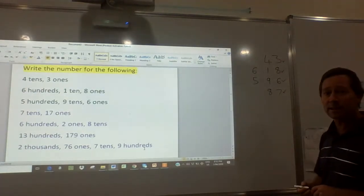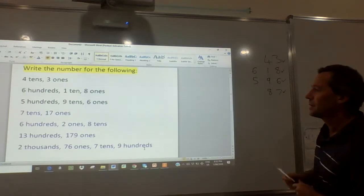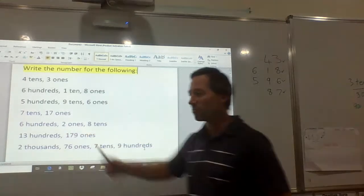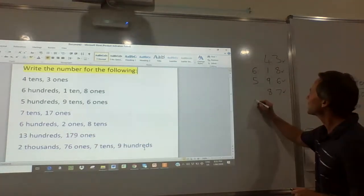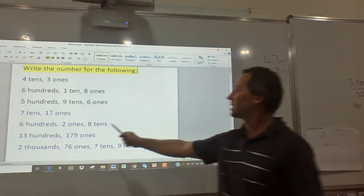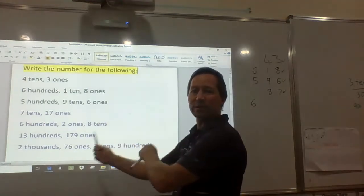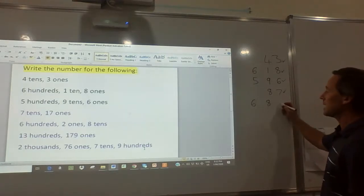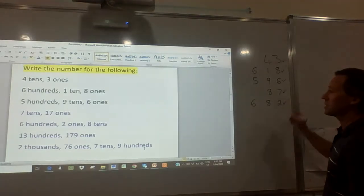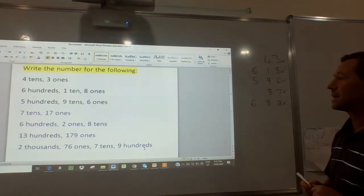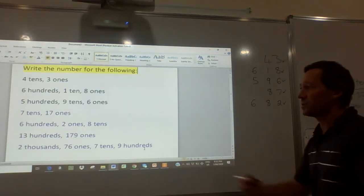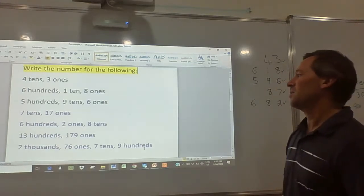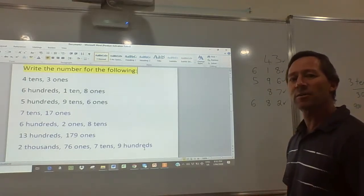How'd you go with that one? Did you get that? 6 hundreds, 2 ones, 8 tens. So 6 hundreds looks pretty good at this stage - 600. But the ones are the wrong way around with the tens, so 8 tens would be in that column and 2 ones. 600 and 82. Even Mr. Lear's getting confused!